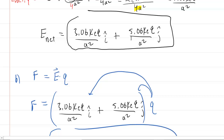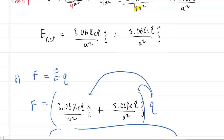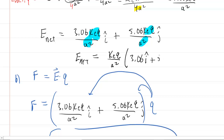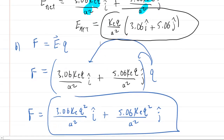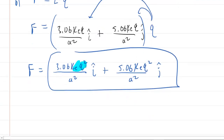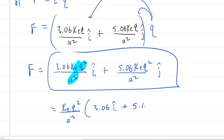For those who want a cleaner form, notice that kEQ/A² is a common factor in the electric field. Factoring it out gives: E = (kEQ / A²)(3.06 î + 5.06 ĵ). Similarly, the force can be factored as: F = (kE Q² / A²)(3.06 î + 5.06 ĵ). That is an alternative, neater form for both the electric field and the force.